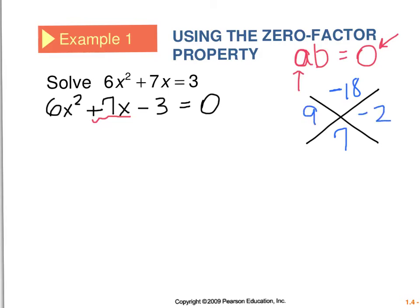So this middle term of positive 7 is going to be split into the terms 9 and negative 2. And so I'm just going to do a little rewriting here. This is going to become 6x squared plus 9x minus 2x minus 3 equals zero.